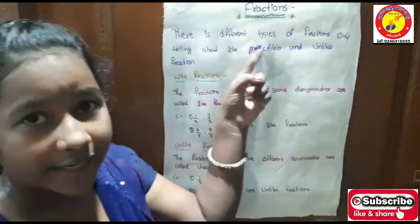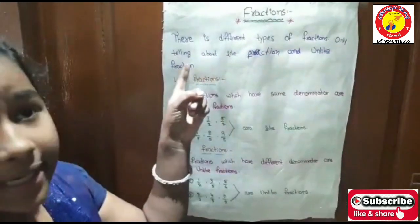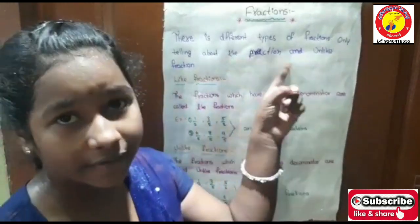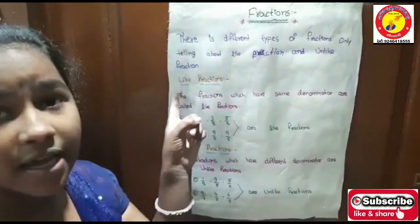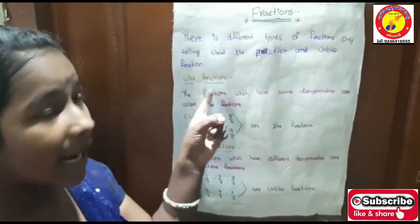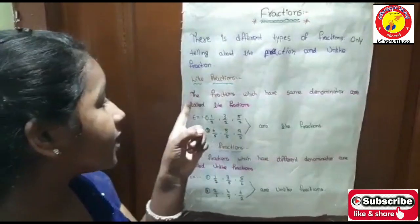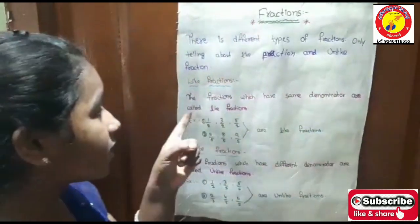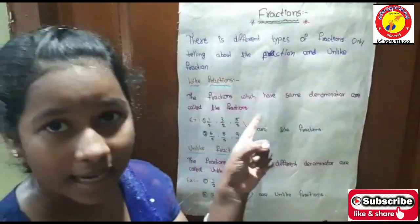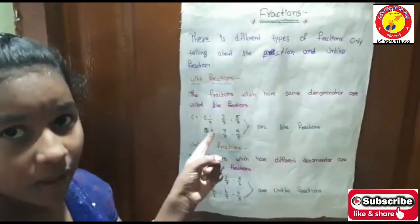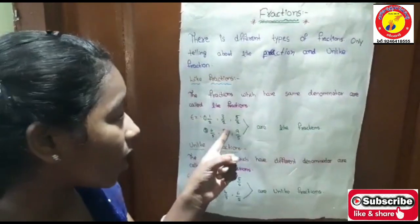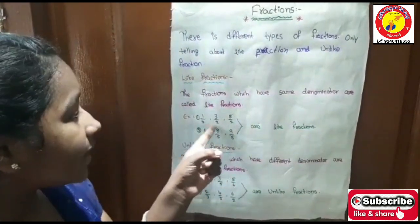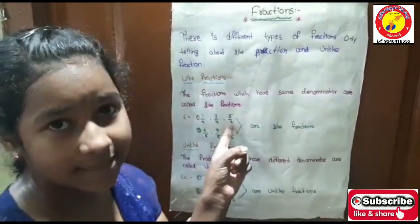There are different types of fractions. I am telling about like fractions and unlike fractions. First of all, like fractions. The fractions which have the same denominators are called like fractions. For example, 1/2, 3/2, 5/2. The denominators should be same.